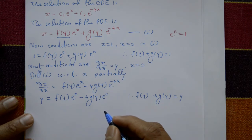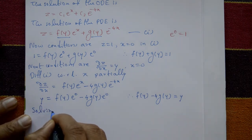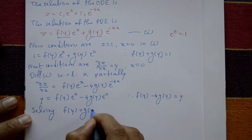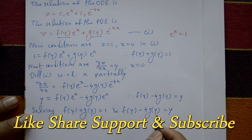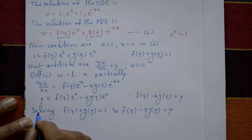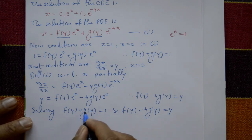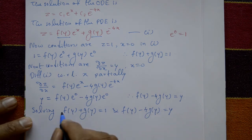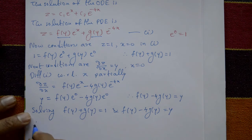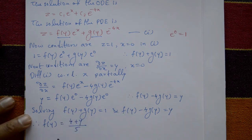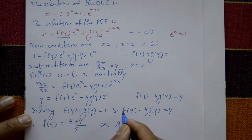Solving the two equations — f(y) + g(y) = 1 and f(y) − 4g(y) = y — multiply the first by 4 and add: 4f(y) + 4g(y) = 4, and the 4g(y) terms cancel, giving 5f(y) = 4 + y, so f(y) = (4 + y)/5. Substituting back, g(y) = (1 − y)/5.